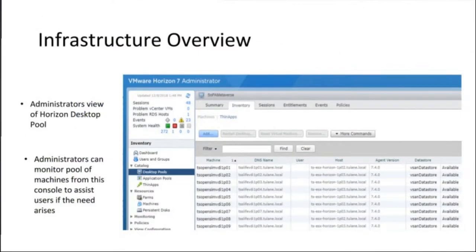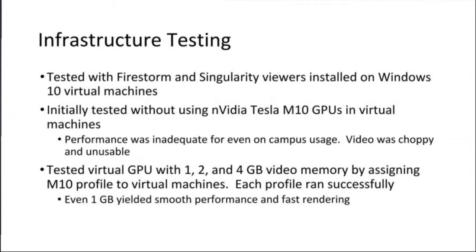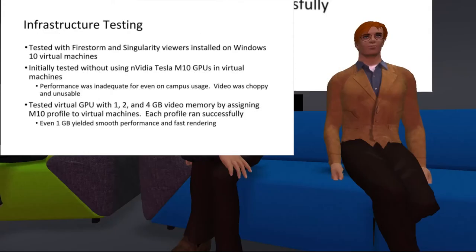Here is the Horizon Administrator console, which facilitates the connection between end users and virtual machines running on the infrastructure. For testing, we used the Firestorm and Singularity viewers, which are highly recommended and popular. We installed them on Windows 10 virtual machines using the Long-Term Servicing Branch — LTSB — of Windows 10, which seemed a better fit for running in a virtual environment. We actually tried without the GPUs, and it was pretty much unusable — the video was choppy and not feasible.